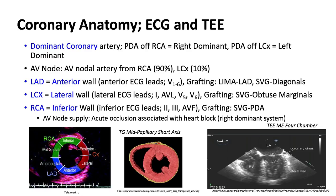The circumflex coronary artery supplies the lateral wall in general, and the lateral electrocardiographic leads — 1, AVL, V5, and V6 — are the ones we monitor. If we see ST segment elevation in V5 and V6 we think that's the lateral wall, possibly a circumflex problem. If it's ST segment elevation, we may send them immediately to the cath lab for intervention like stenting. Grafting to the circumflex is usually done to its branches, the marginals.